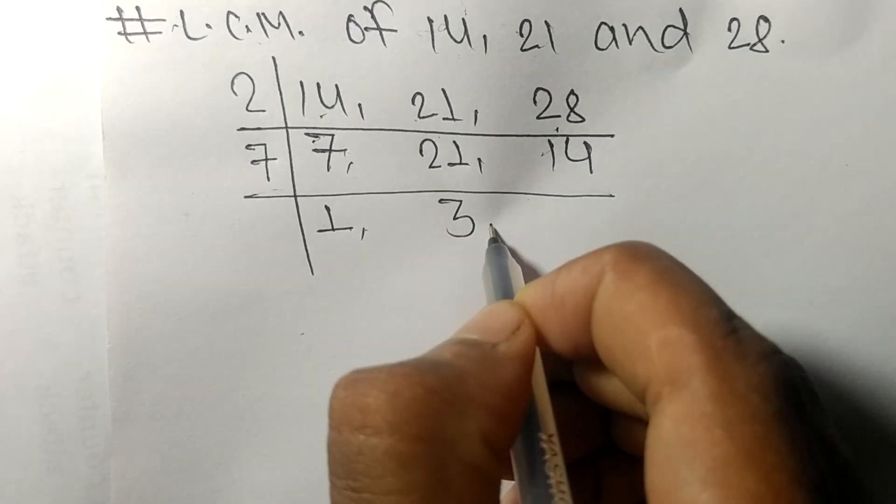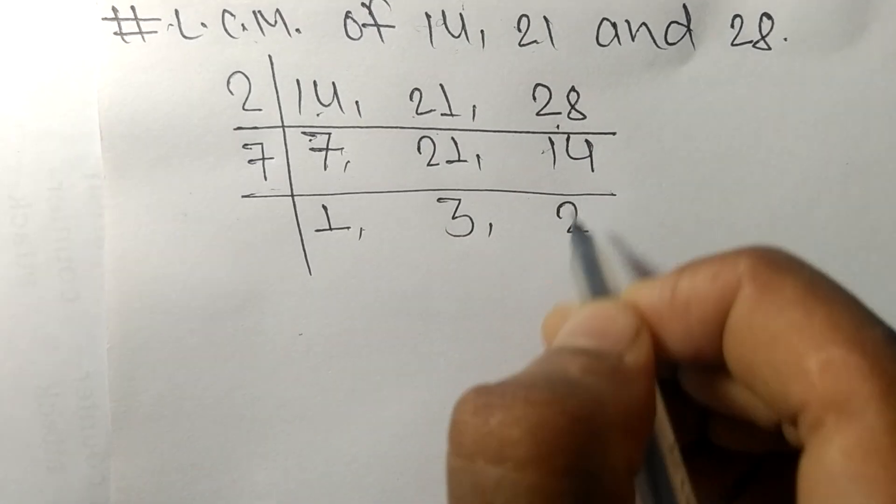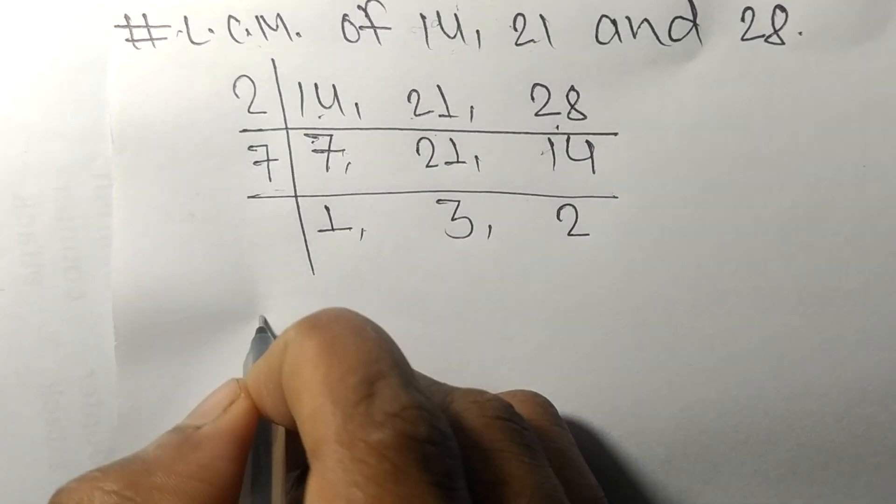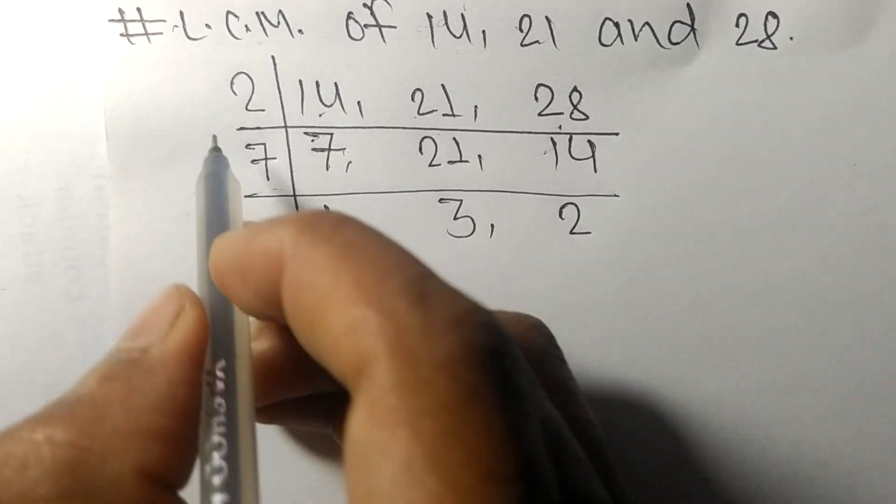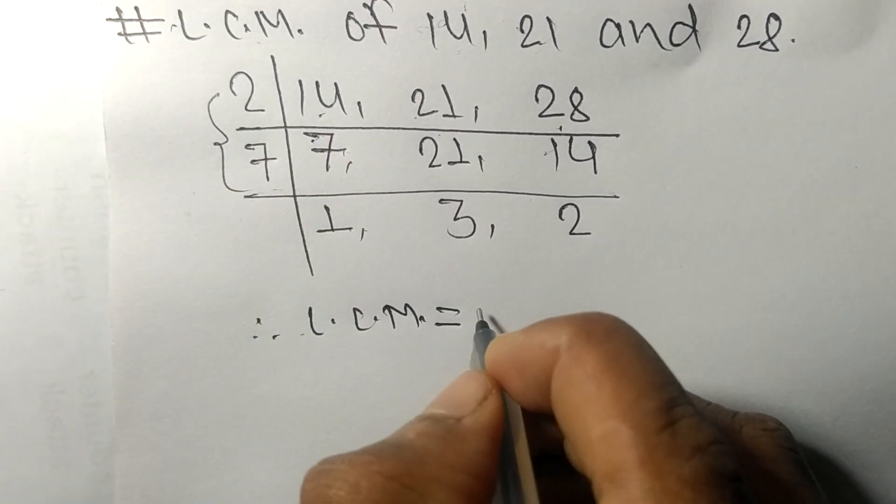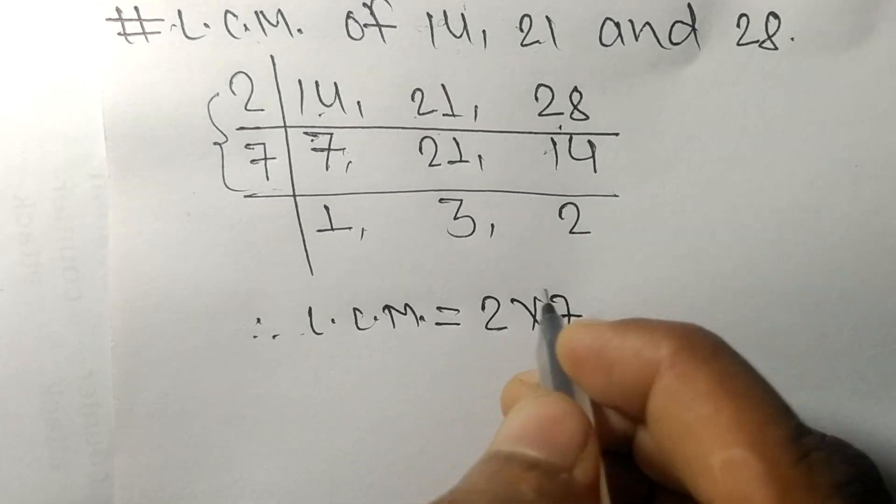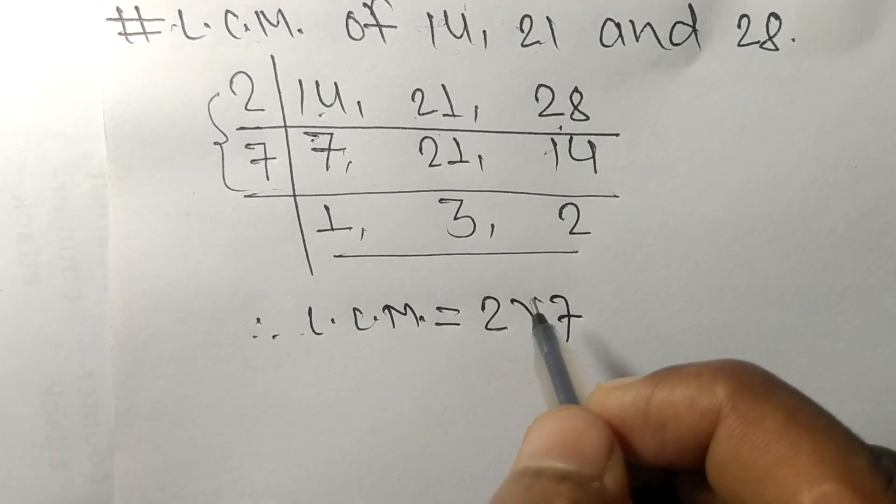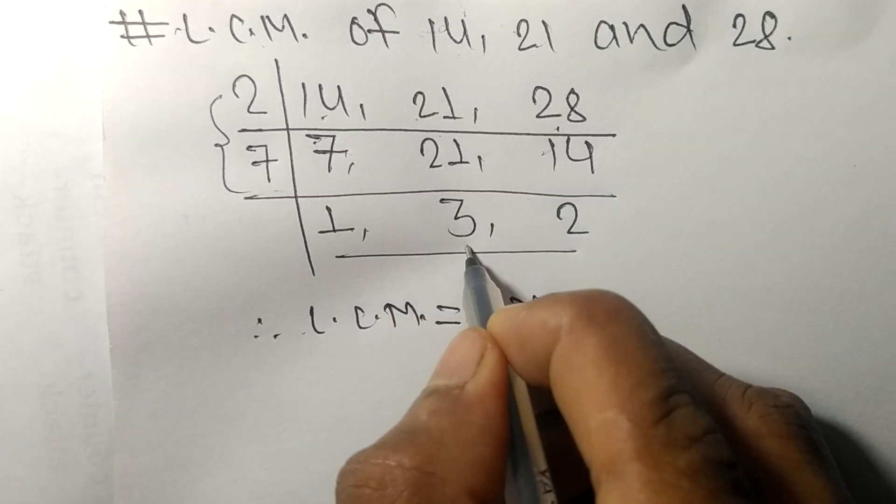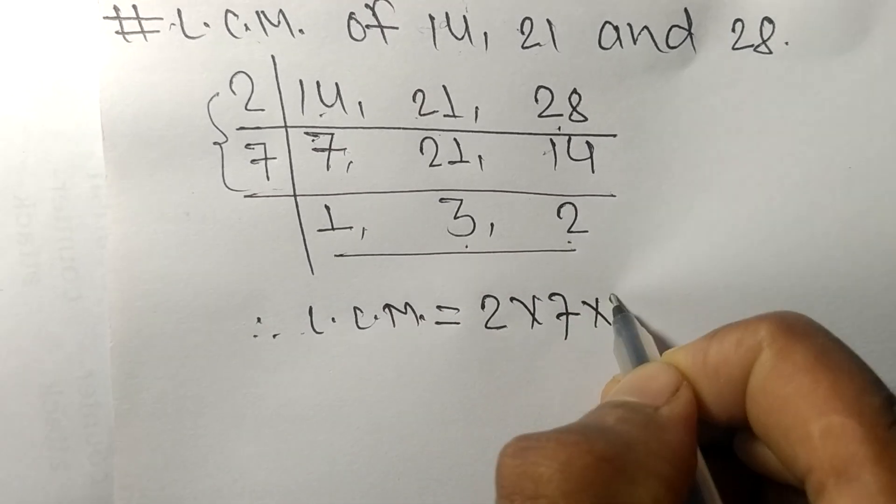So the LCM is equal to... from this side it is 2 times 7. From this side we choose the numbers greater than 1, that is 3 and 2.